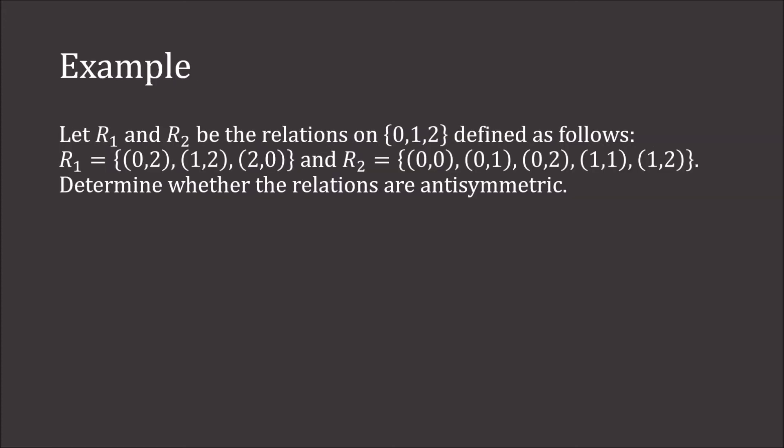Let's look at two relations on the set {0, 1, 2}. R1 is the set of ordered pairs: (0,2), (1,2), and (2,0). R2 is the set of ordered pairs: (0,0), (0,1), (0,2), (1,1), and (1,2). We wish to determine whether these relations are anti-symmetric.